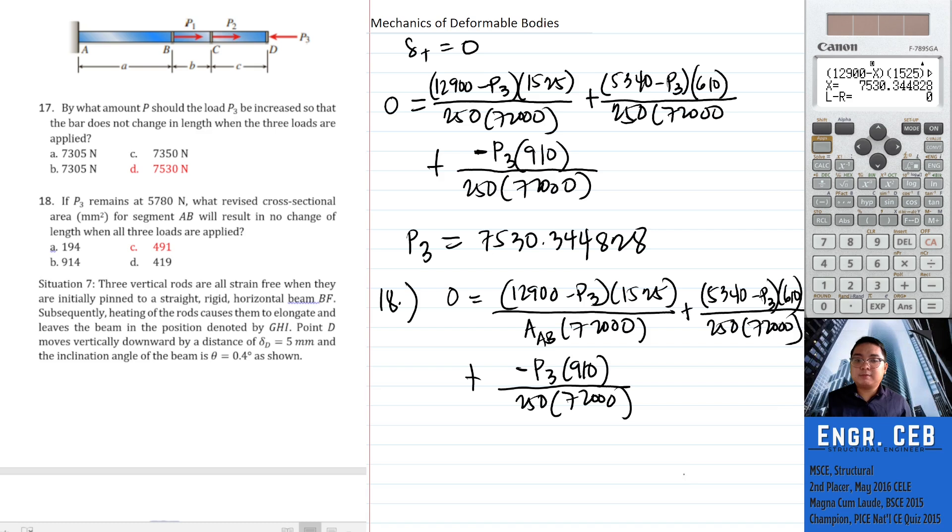According to the problem, P3 remains 5780. Substitute the value of P3 as 5780, and then we can compute for the value of A sub AB. So let's solve. AB is 491.02782 mm². And that is letter C.